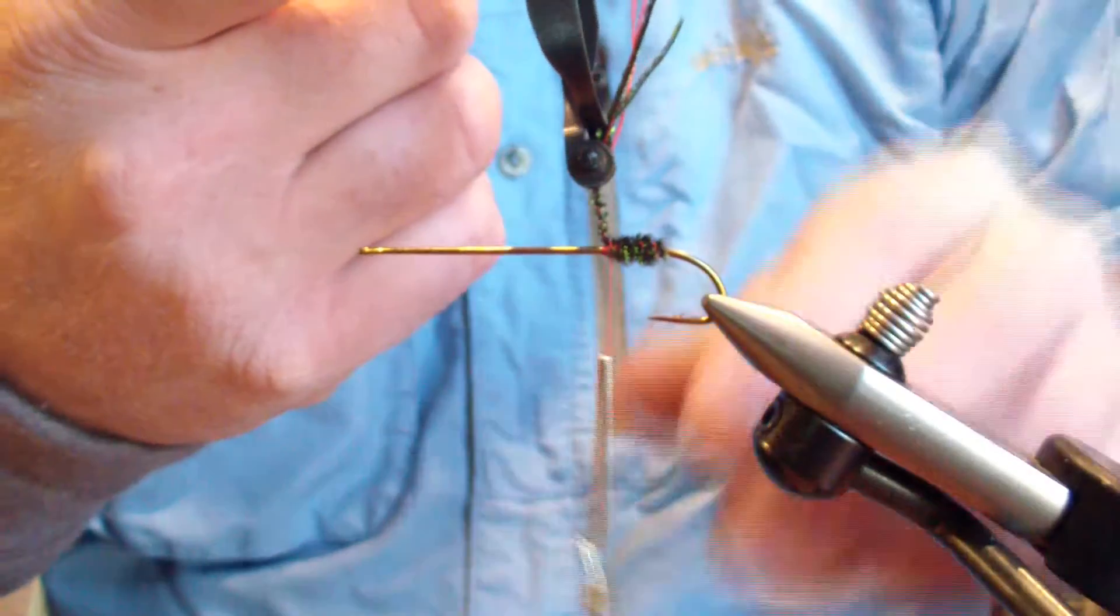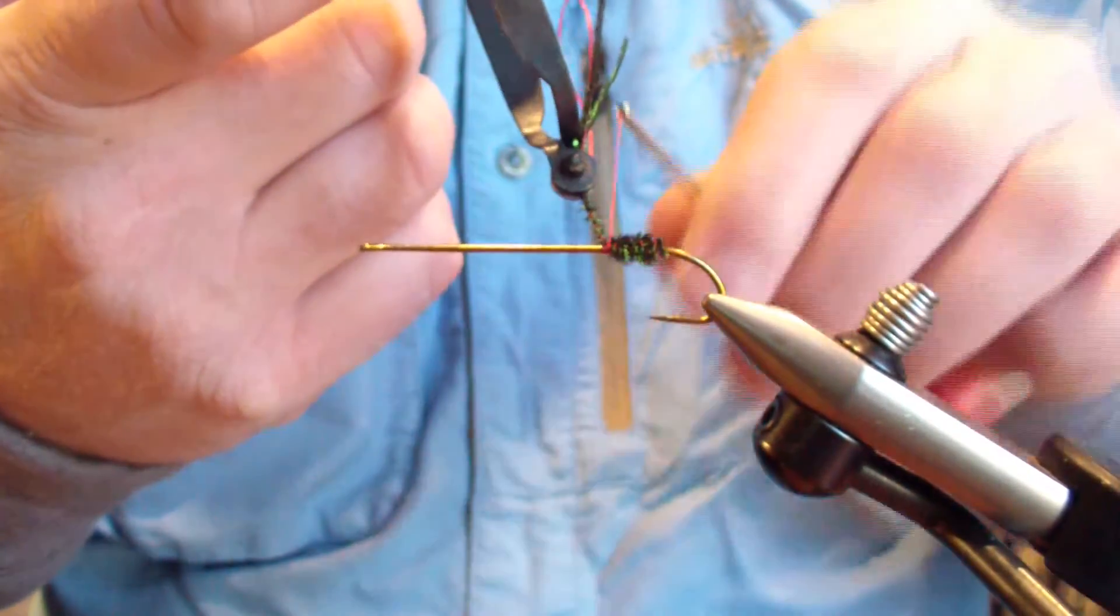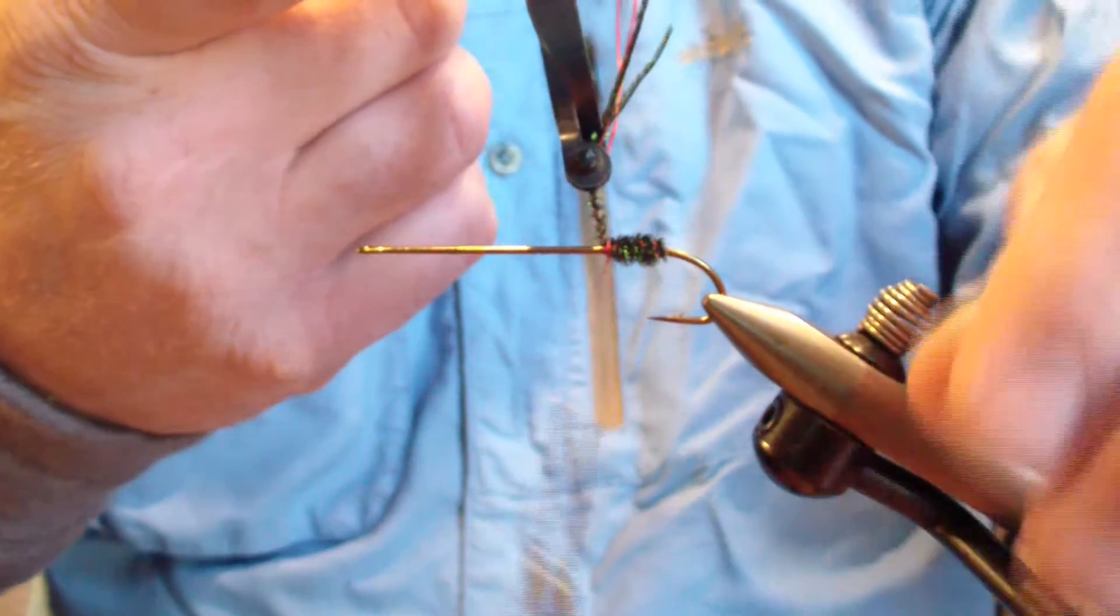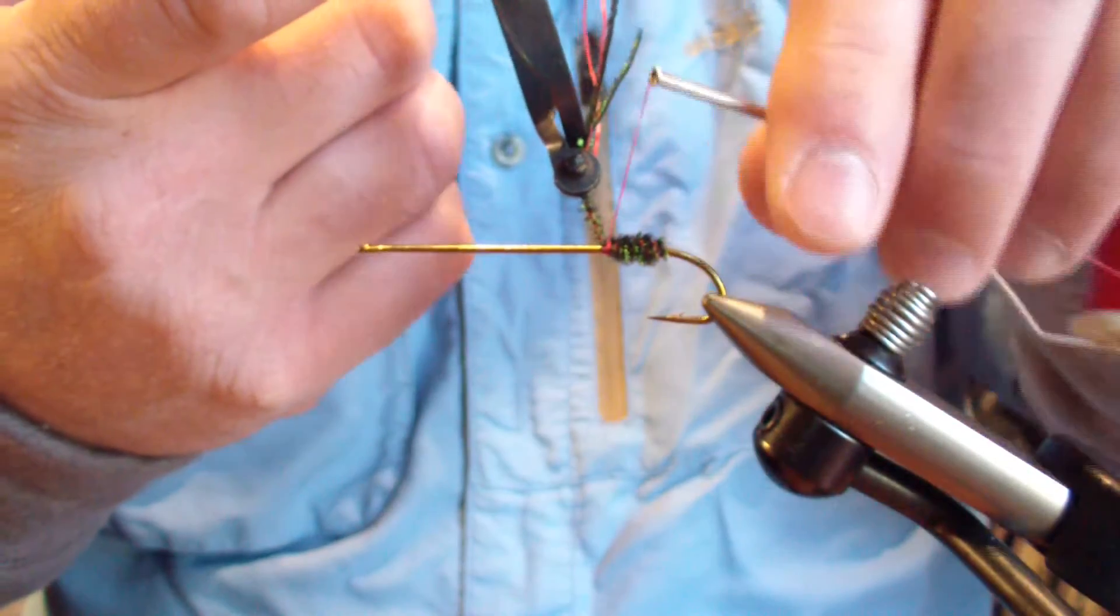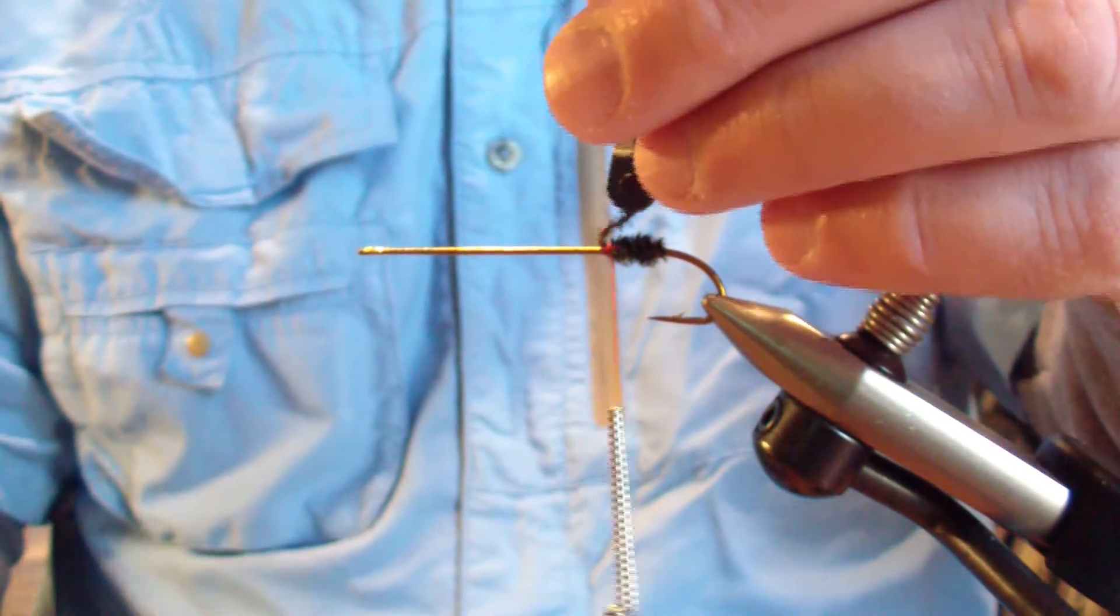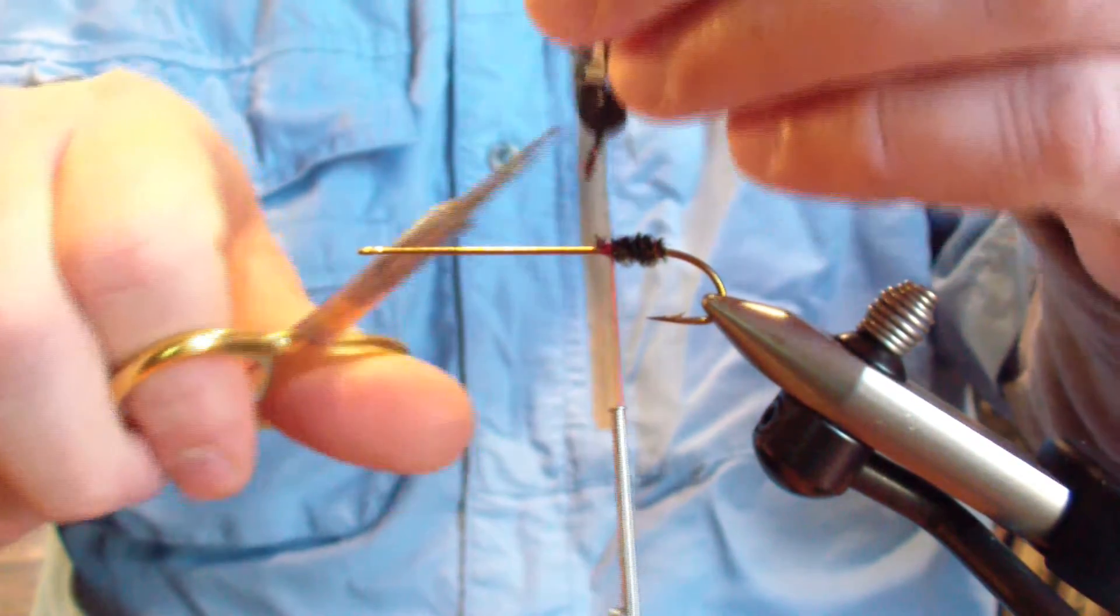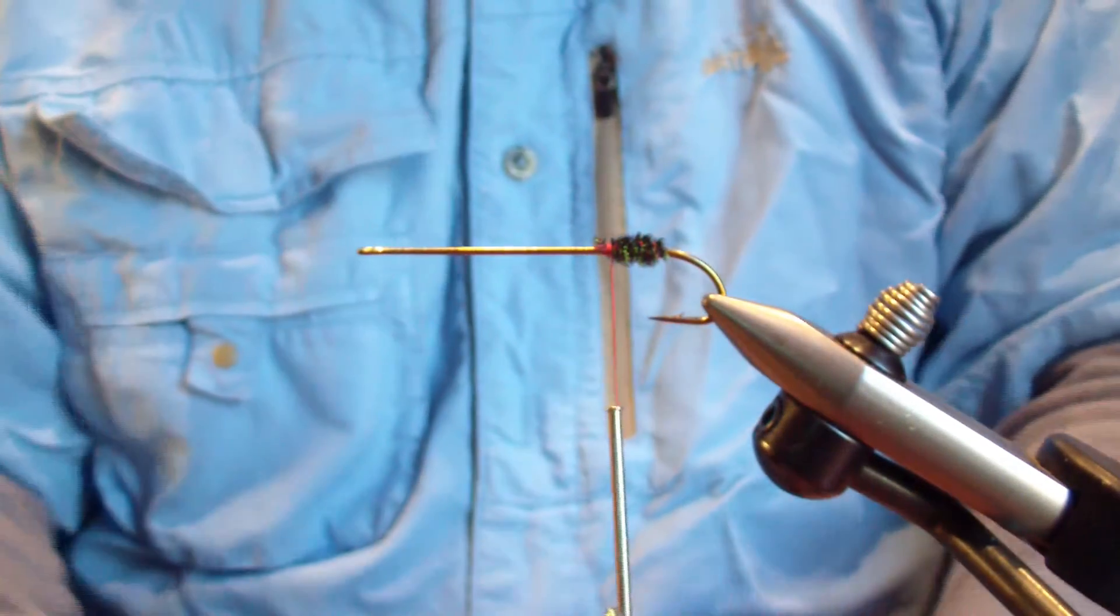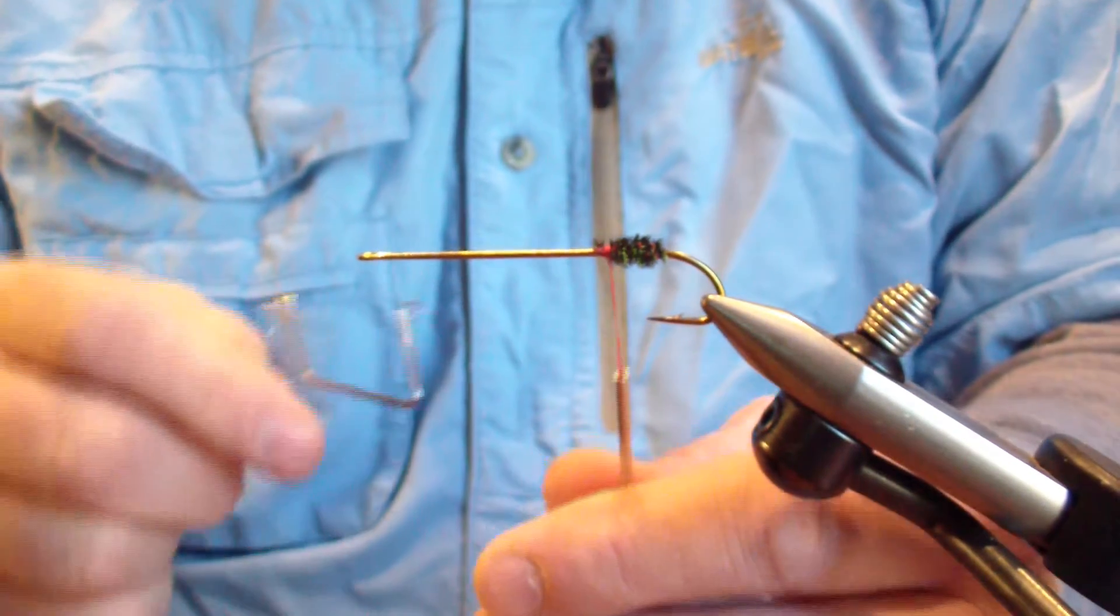And although I don't use red thread, I could. You could enhance the body. But generally I don't when I'm making just a hurl body. And that's the method I use for tying in just a hurl body, standard hurl body.